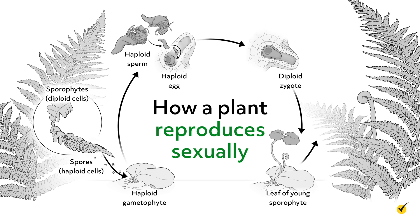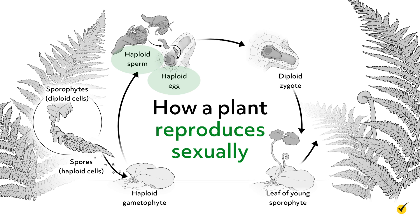Let's look at how a plant reproduces sexually in a little more detail. Plants are unique in that they have two generations: a sporophyte generation and a gametophyte generation. Sporophytes are diploid cells that will undergo meiosis to produce haploid spores. These spores will then undergo mitosis to form the haploid gametophyte generation. Unlike animal cells that undergo mitosis to go from haploid to diploid, the haploid spores undergo mitosis to produce haploid gametes, which are genetically identical. The gametophyte will produce haploid sperm and egg gametes. So when the sperm gamete fertilizes the egg gamete, it results in a diploid zygote, which can then undergo mitosis as usual to form more sporophytes.